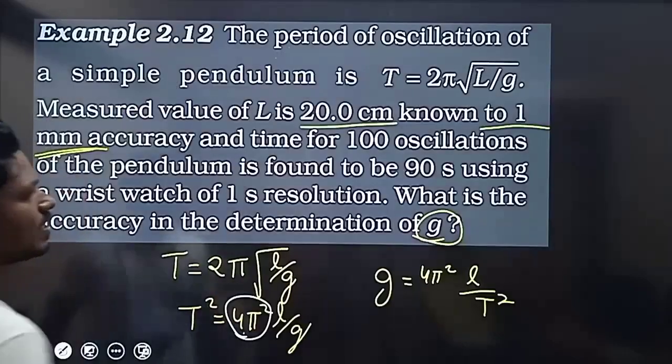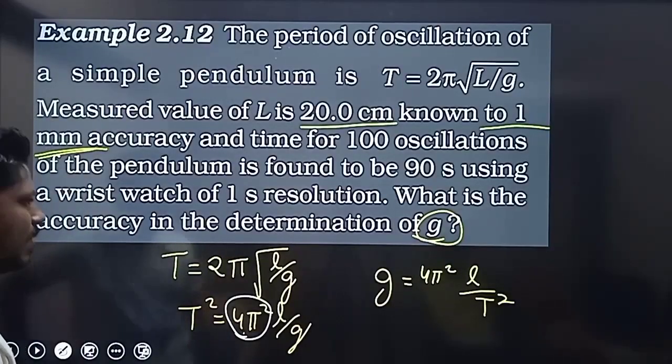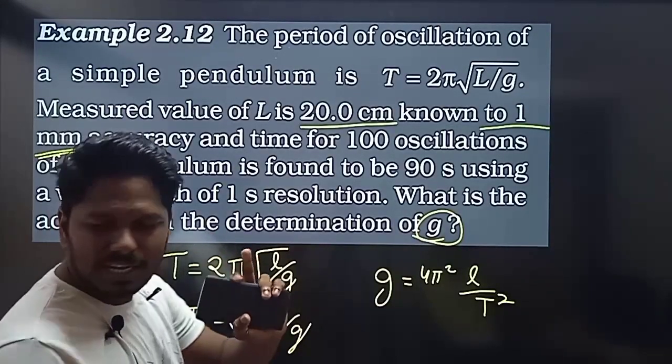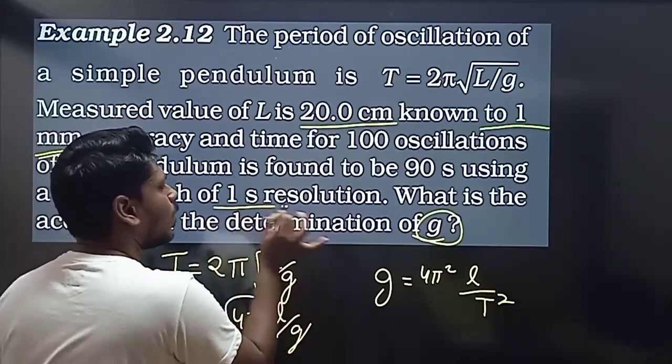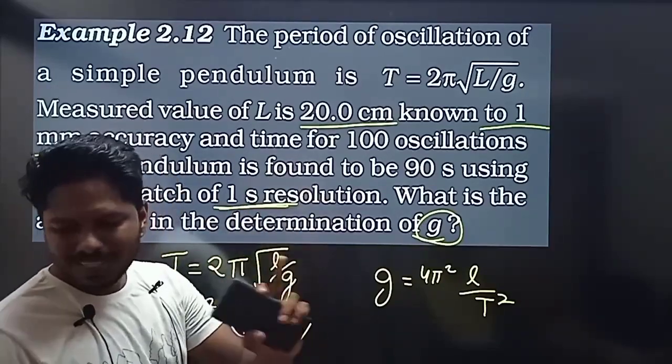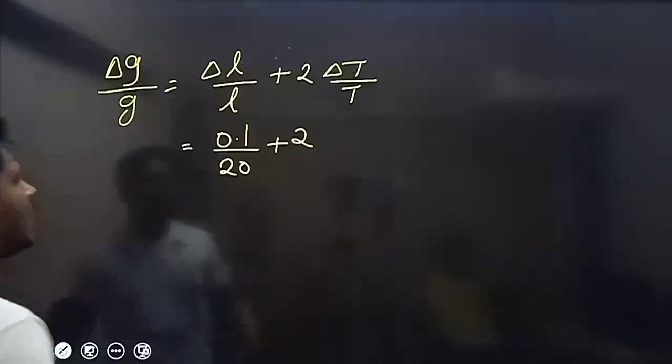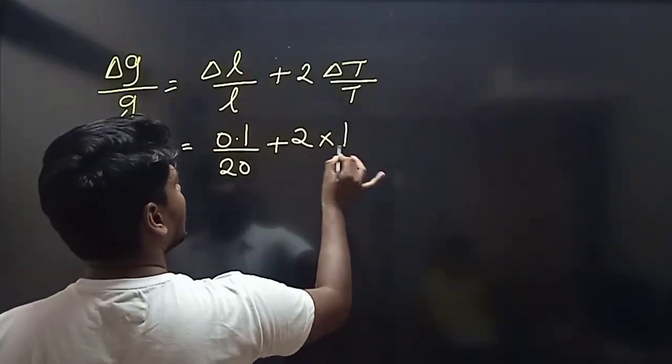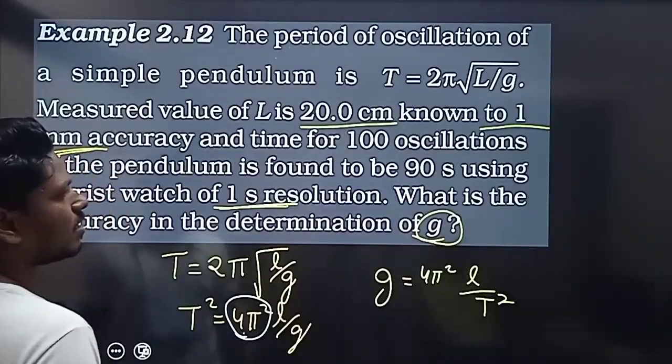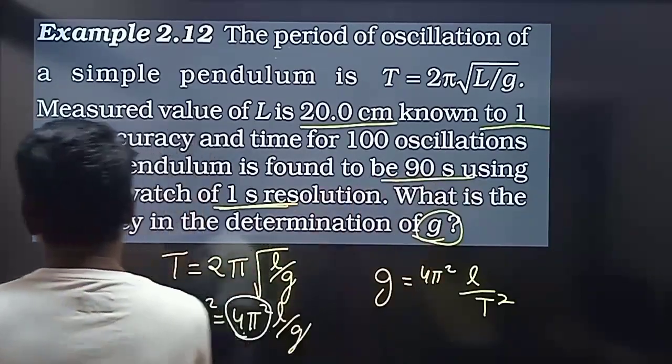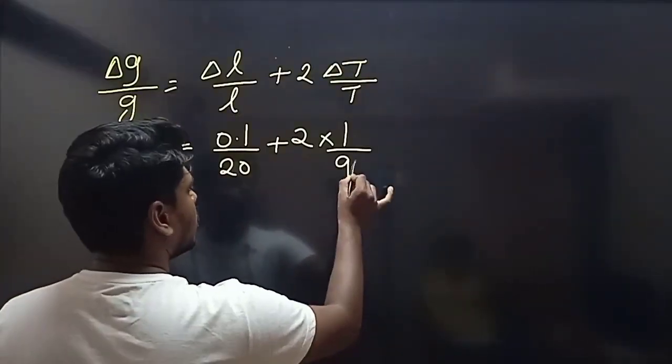2 times the error in time. The watch has a minimum resolution of 1 second. The total time is 90 seconds.